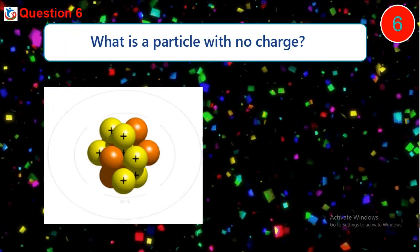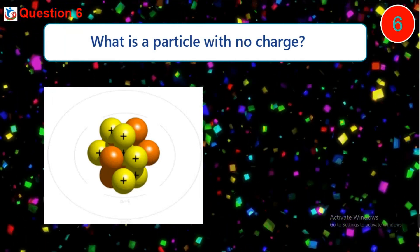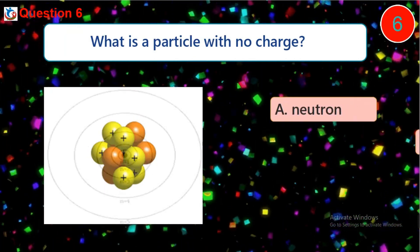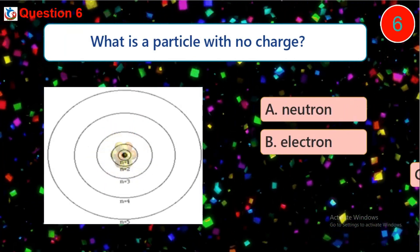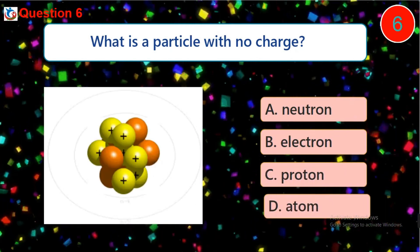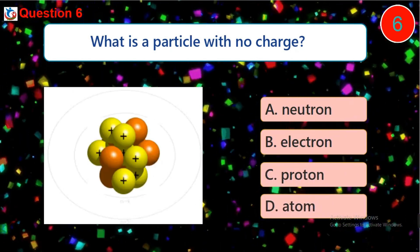Question 6. What is a particle with no charge? A. Neutron. B. Electron. C. Proton. D. Atom.